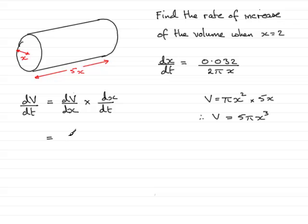So when it comes to finding dv by dx, if we differentiate this, dv by dx would be 15 pi x squared. So I'll pop that in there — 15 pi x squared — and we multiply this with dx by dt, the value that we established in part A of the question.